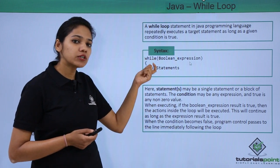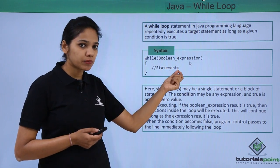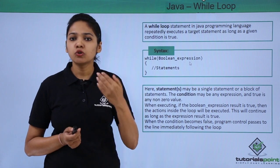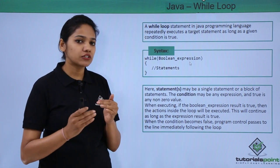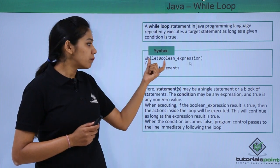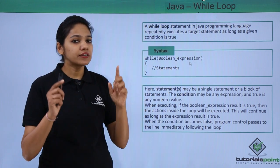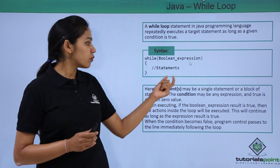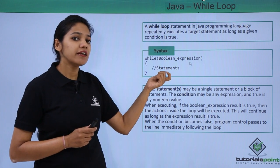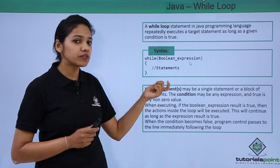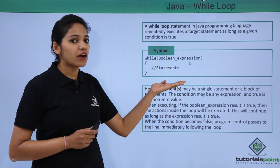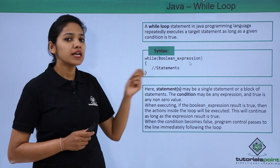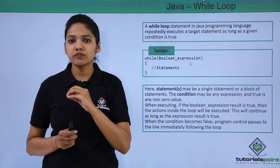We write the while loop with the keyword 'while', then in the brackets you provide the expression. This expression is a boolean expression which results in true or false to check the condition. If the condition is true, execute the block of statements written inside the curly braces. If the condition becomes false, the loop terminates and the JVM starts executing the statements after the loop. These statements may be a single statement or a block of statements.